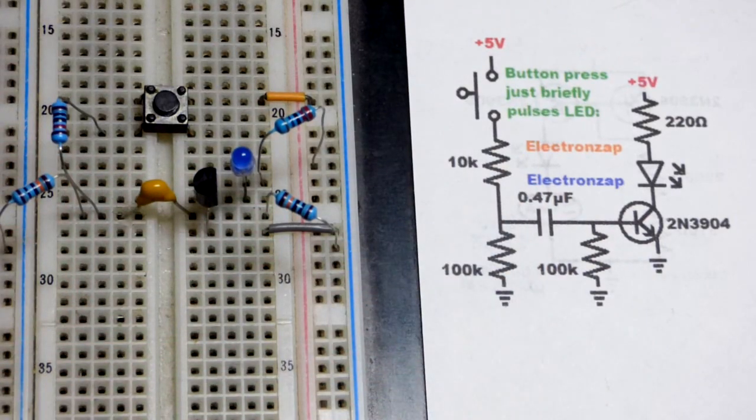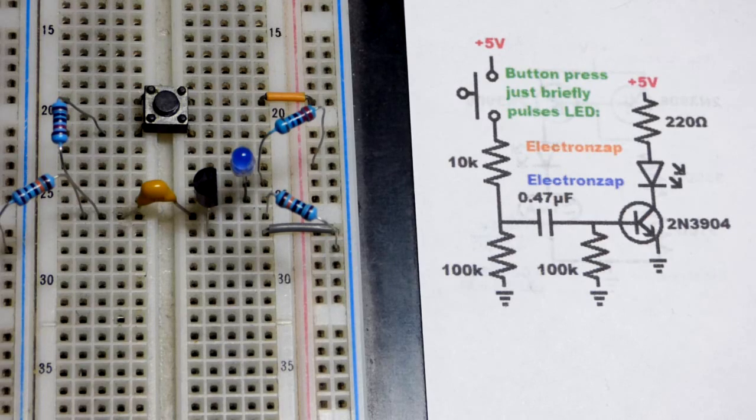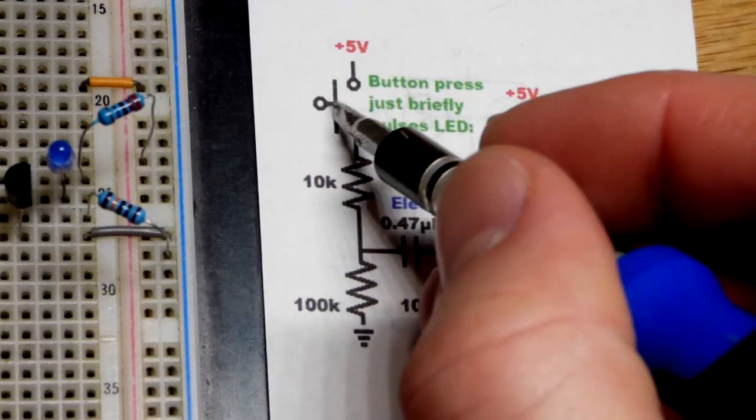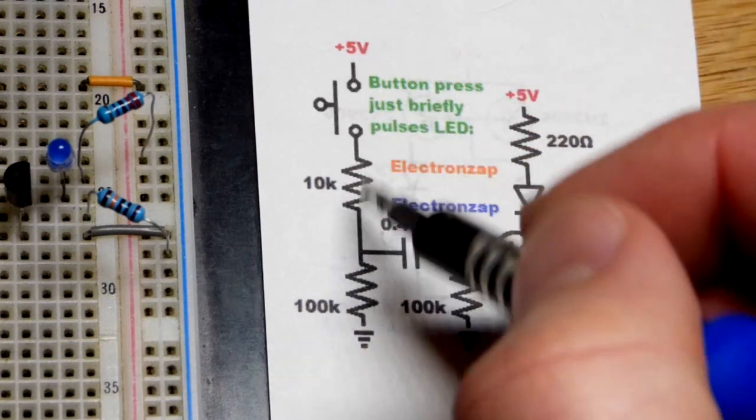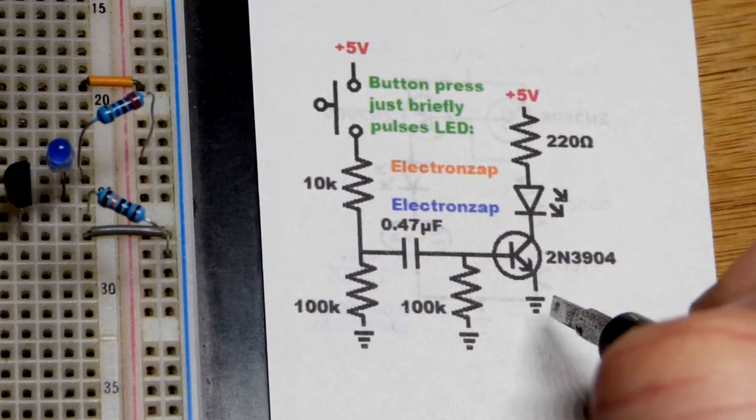A little current's going to trickle to ground through that 100-kilohm resistor as well. So now, while the switch is being closed, right when it's closed, the capacitor starts charging like that.